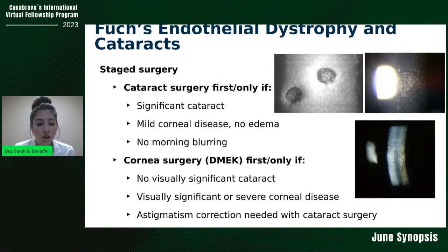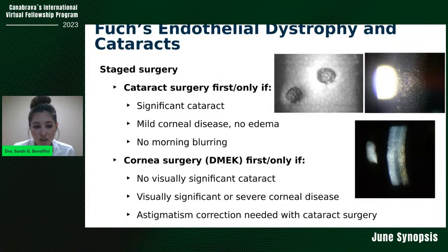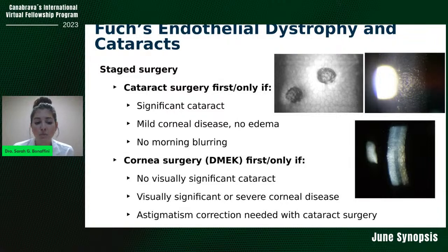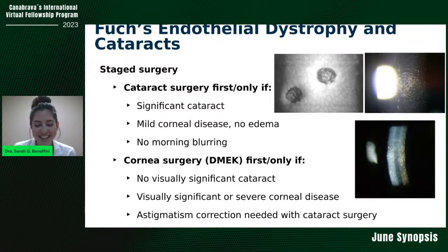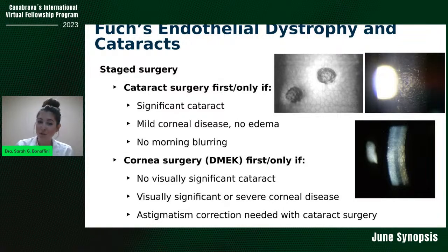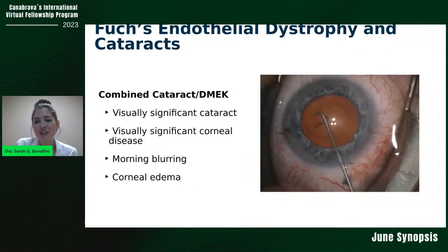You should do specular microscopy and get an endothelial cell count. If the patient has obvious corneal edema, consider pachymetry — results can help guide your surgical decisions. If the cornea is more than 600 microns (some say 620), consider a combined FACO-DMEK or FACO-DSAEK. If less than that, make sure you're using a lot of dispersive viscoelastic, refill the anterior chamber often, and FACO as far away from the endothelium as possible but not too close to the posterior capsule.